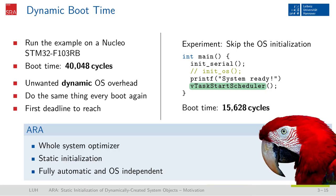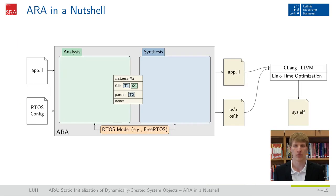To reach this goal, we implemented ARA as a whole system optimizer. It performs static compile-time analysis and specialization of the operating system towards the application's needs. The ARA system optimizer consists of two major building blocks: the analysis and the synthesis phase.